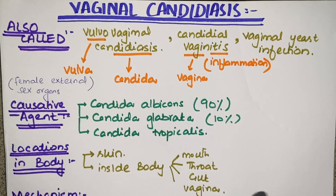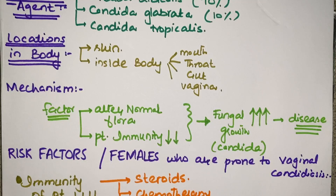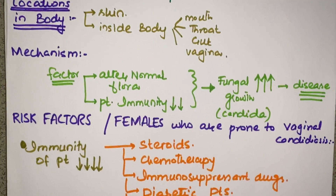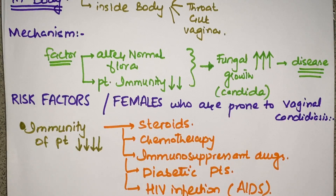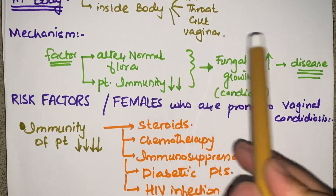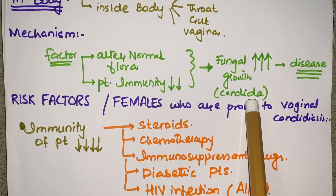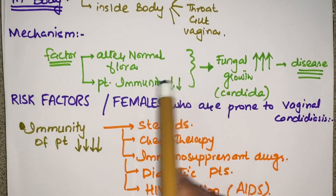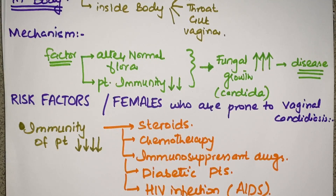When candida is present as normal flora, it is not causing any disease. The basic mechanism of vaginal candidiasis is that any factor which comes and alters the normal flora or decreases the patient's immunity causes these organisms, which are normally present in the body and not causing disease, to overgrow — fungal overgrowth occurs and causes the disease.